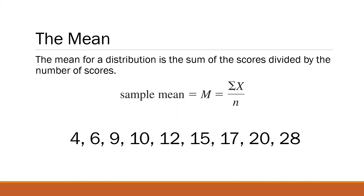For example, in your report card, you usually look at your average grade in order to get an idea of how your overall performance was in a certain semester, quarter, or grading period. So the mean for the distribution is the sum of the scores divided by the number of scores, or divided by the number of observations, divided by the sample size.